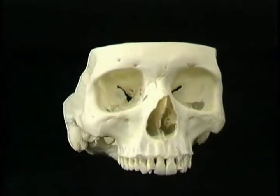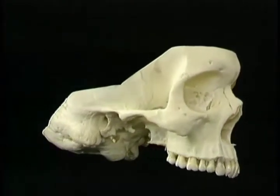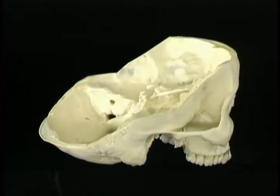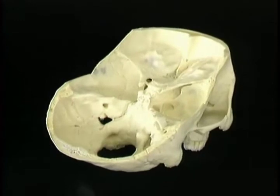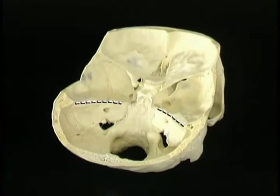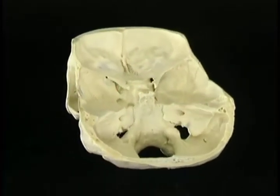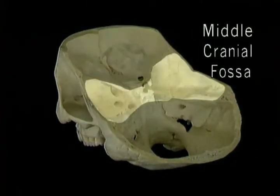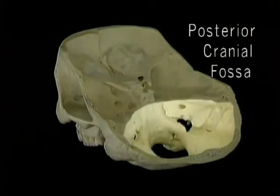Before we look at the individual named bones, we'll examine some features of the inside of the skull. This special skull has been cut away at a series of levels just above the floor of the cranium. The way it has been cut reflects two big steps in the floor of the cranium, formed by the sphenoid ridges and the petrous temporal bones. These divide the floor of the cranial cavity into three parts: the anterior cranial fossa, the middle cranial fossa, and the posterior cranial fossa.